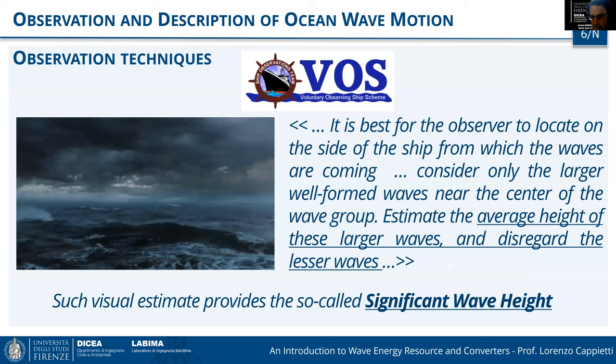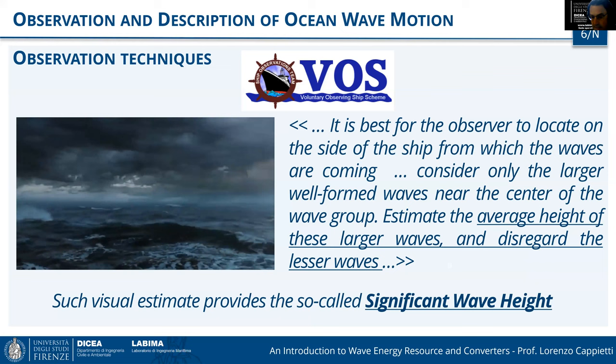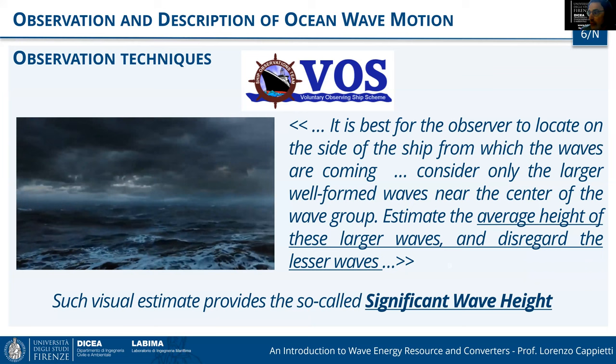Observing a sea state, we see a very irregular natural phenomenon: the sea surface goes up and down, changing in time and space. We face the difficulty of describing this phenomenon using mathematical language. We must deal with the very random characteristics of the phenomenon and develop appropriate mathematical modeling to capture its random nature.